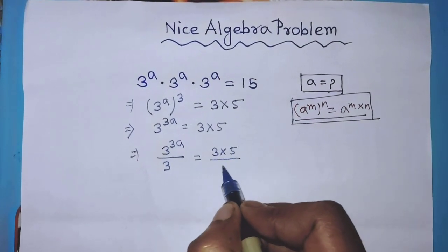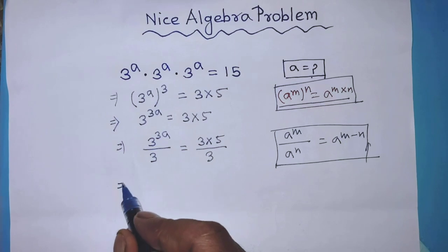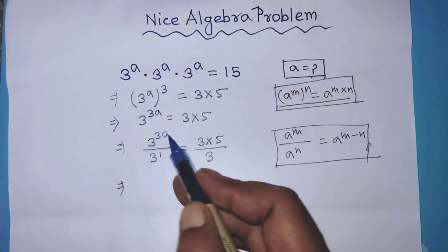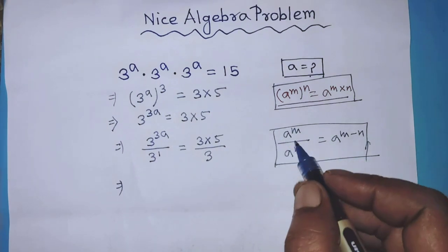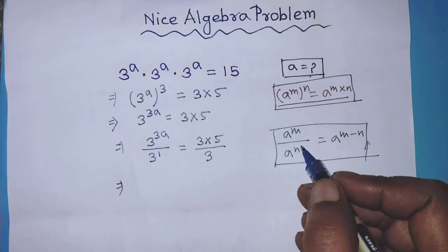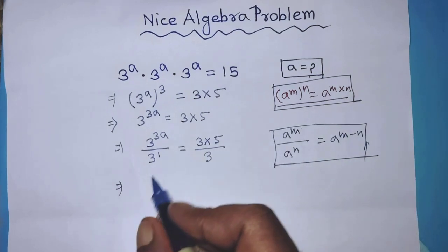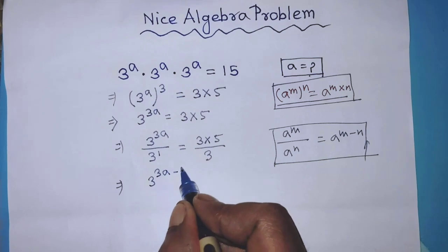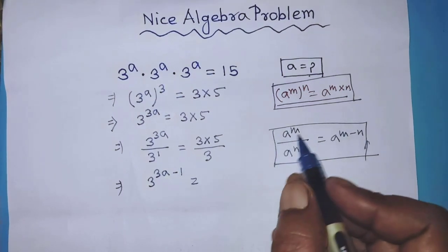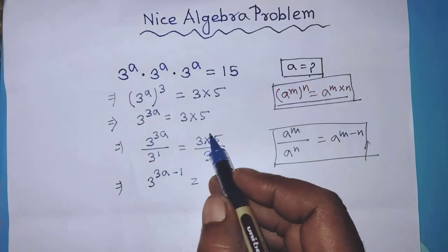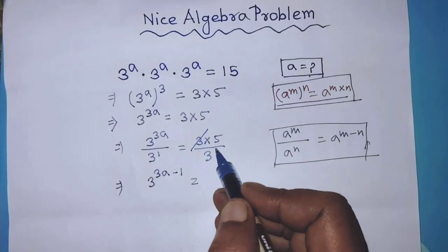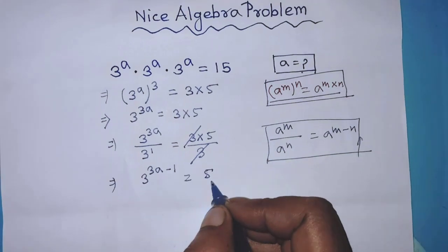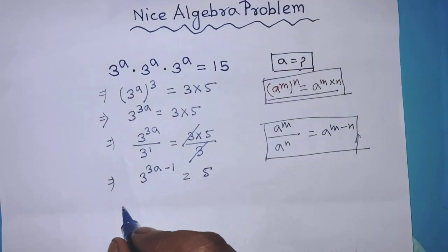To simplify this algebraic expression we apply the exponent division formula. It will be 3 to the power 3a minus 1 is equal to — on the right hand side, we can cancel 3 from numerator and denominator — then it will be 5.